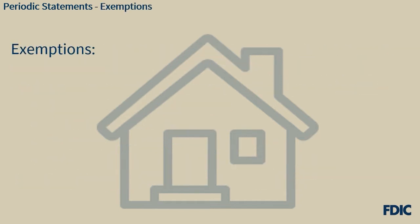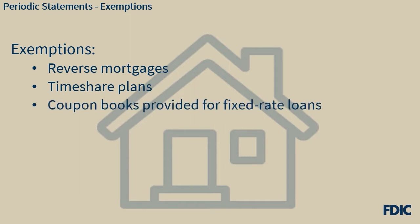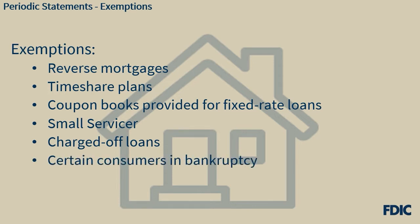The periodic statement requirement generally does not apply to fixed-rate loans if the servicer provides a coupon book, provided that certain criteria are met. Servicers do not need to send periodic statements for the following exempt transactions: reverse mortgages, timeshare plan loans, fixed-rate loans when a coupon book containing specific information is provided, loans serviced by small servicers, charged-off loans provided there are no additional fees or interest charged on the account, and in certain circumstances, loans while the borrower is a debtor in bankruptcy.